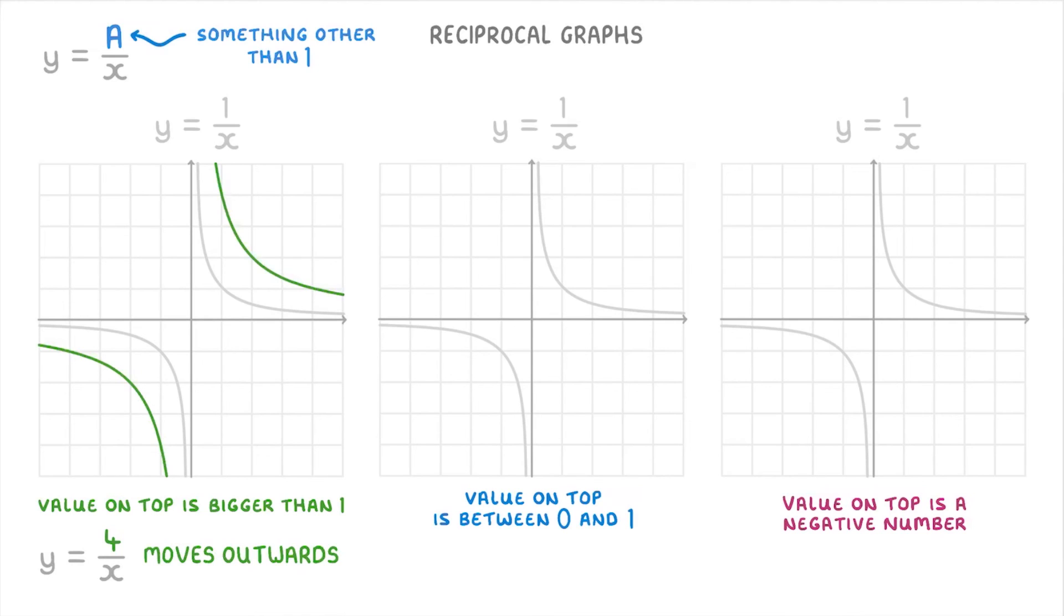Meanwhile, if the value on top is between 0 and 1, like maybe 0.5, then the graph does the opposite, and moves inwards towards the axes.